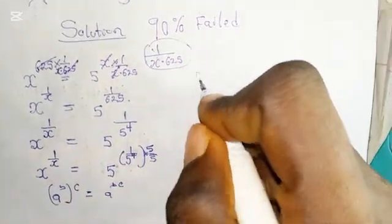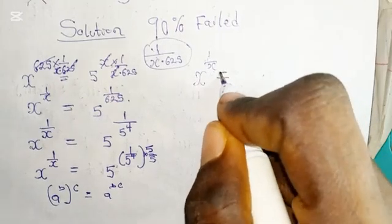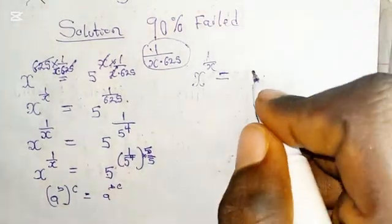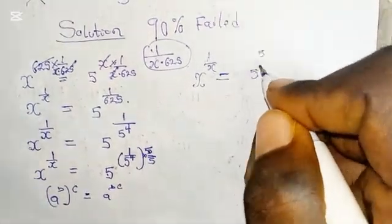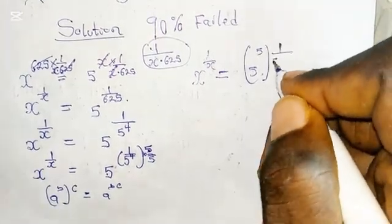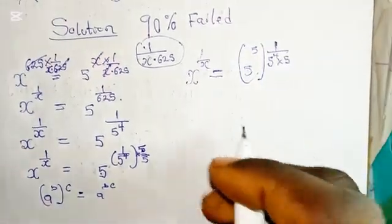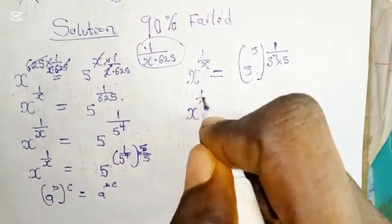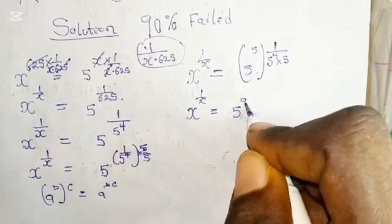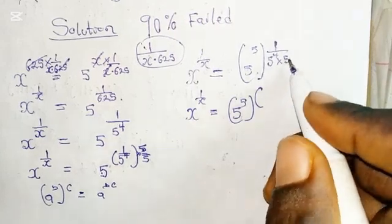So using this property, x raised to the power 1 over x equals 5 raised to the power — we are going to bring this 5 here — so we have 5 raised to the power of 5, in bracket, with 1 over 5 raised to the power of 4, multiplied by 5. So x raised to the power 1 over x is equal to 5 raised to the power of 5 into bracket.